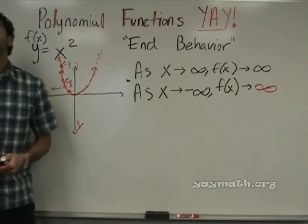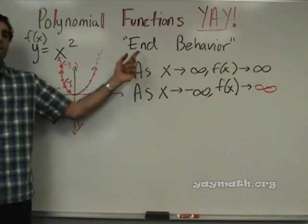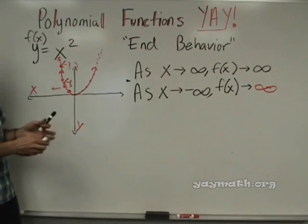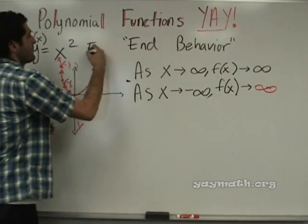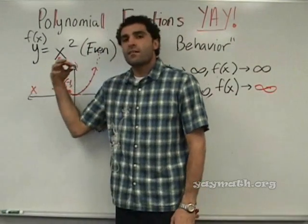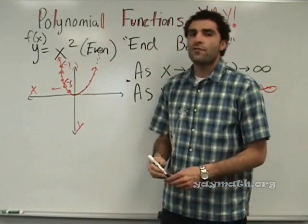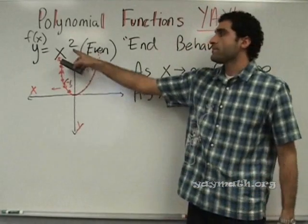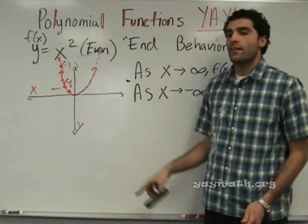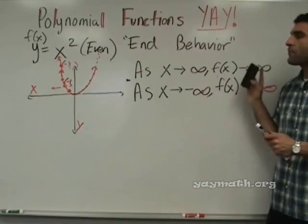An odd function would be x to the 3rd, or x to the 9th, or x to the 7th. X is odd — x to the 1st. X to the 2nd is even. X to the 4th is even. X to the 3rd is odd. So we just did the end behavior for a parabola. Now I want to show you some more.